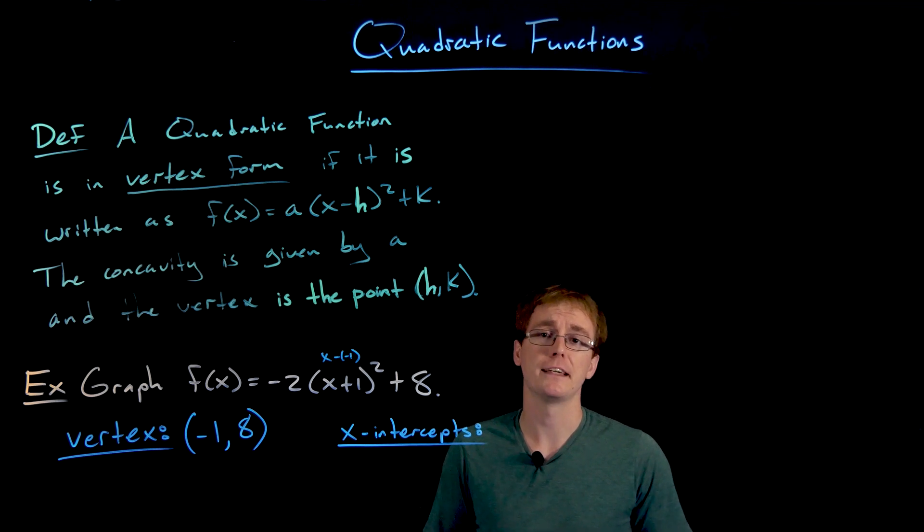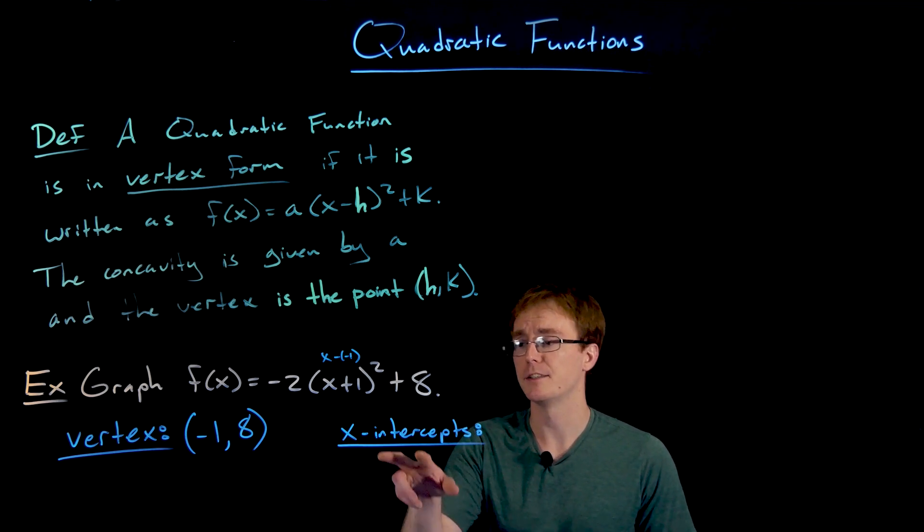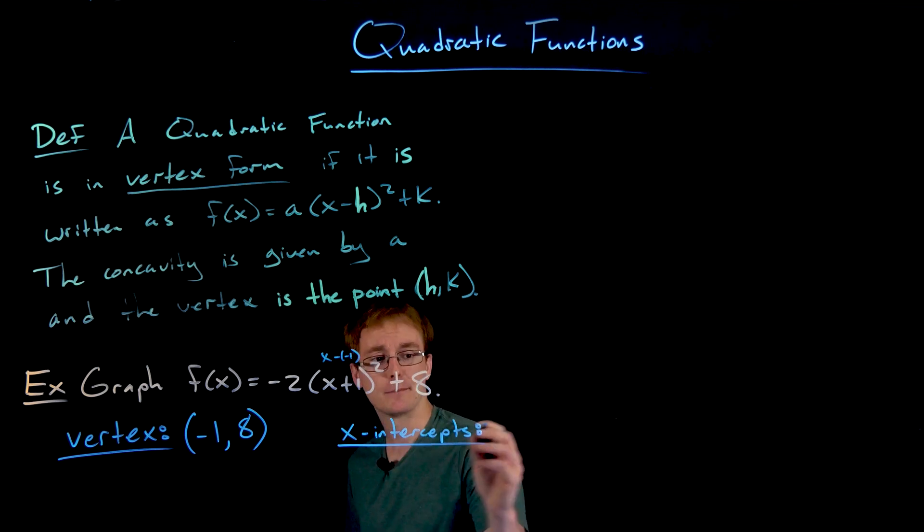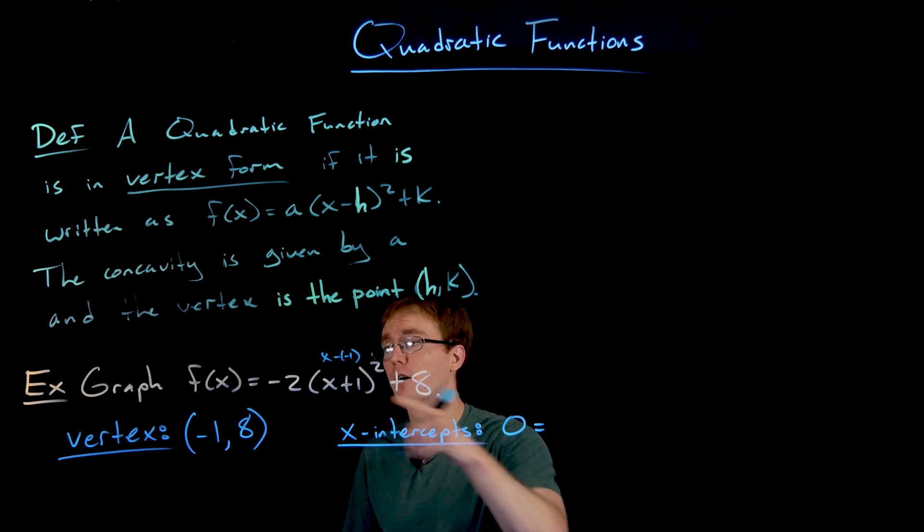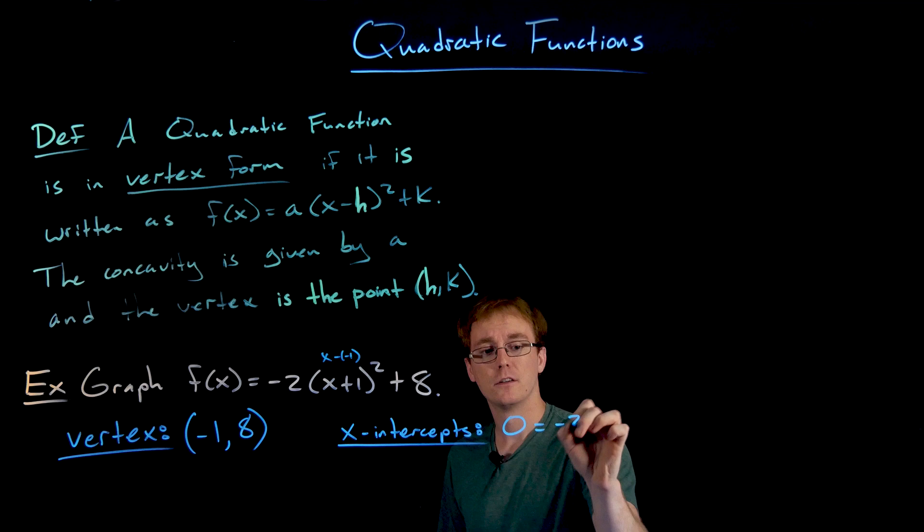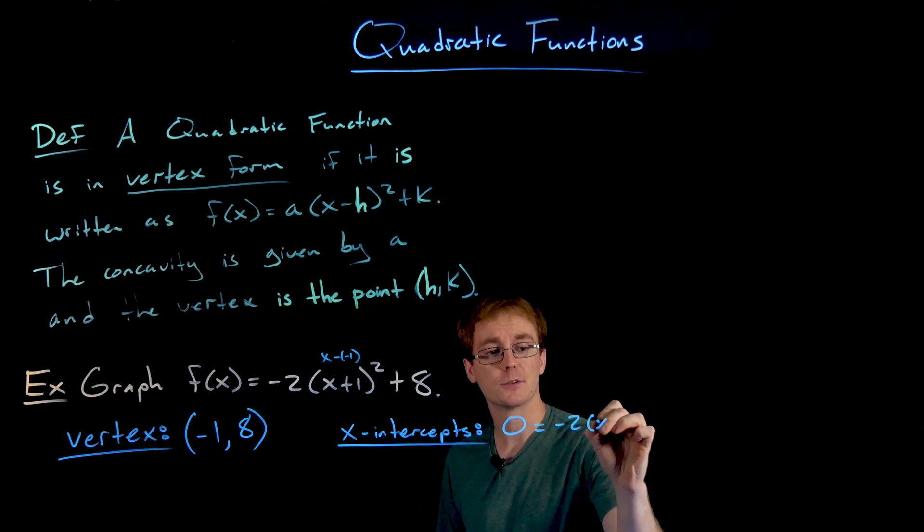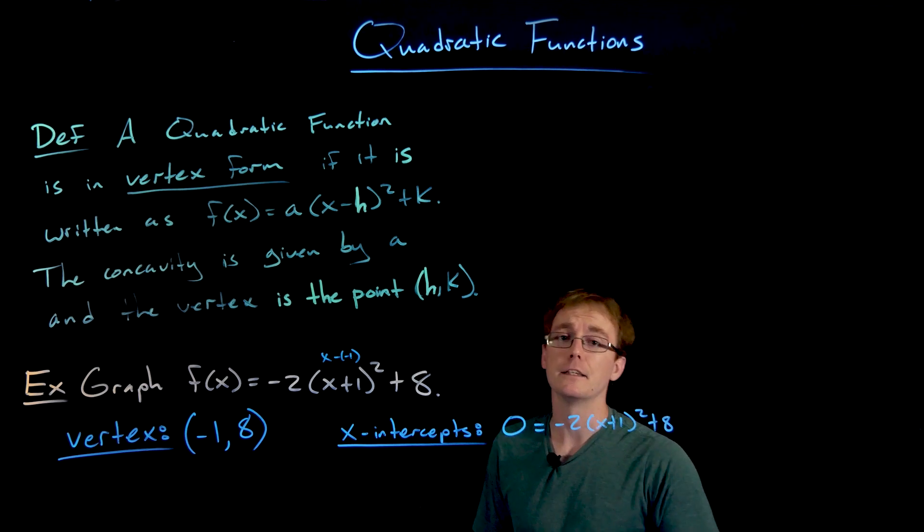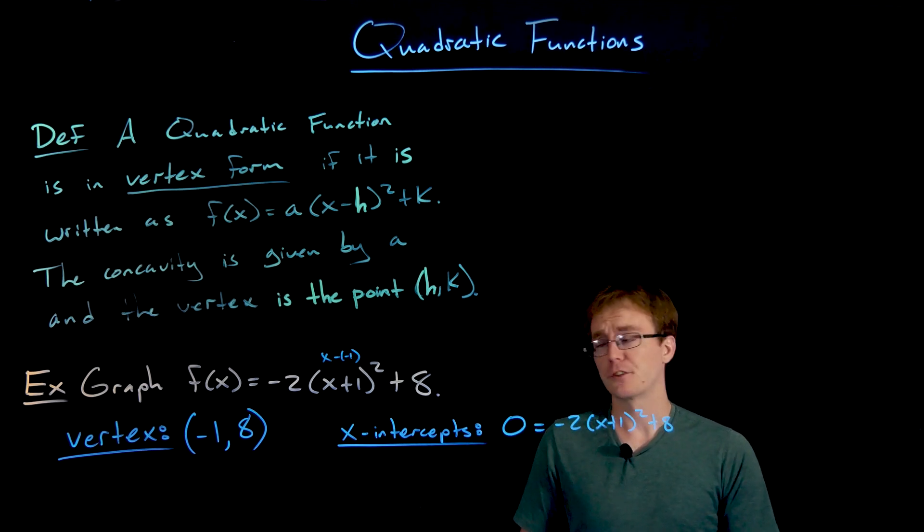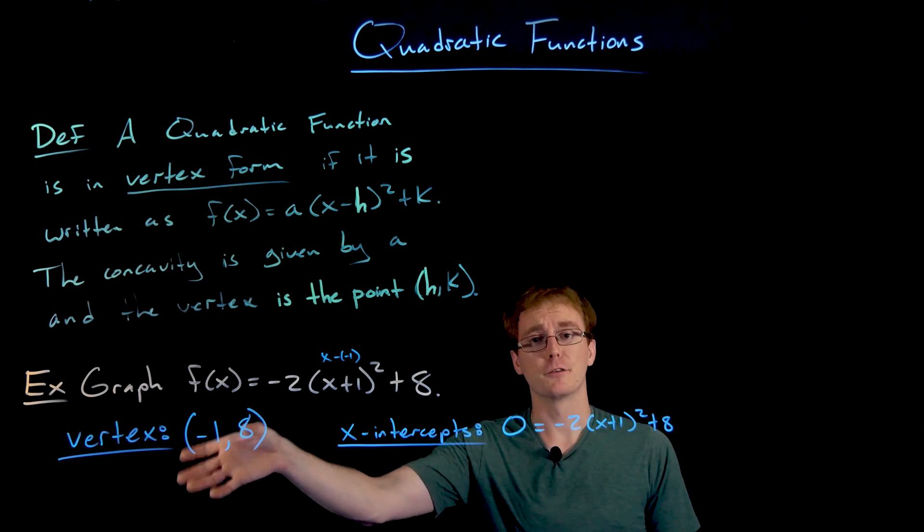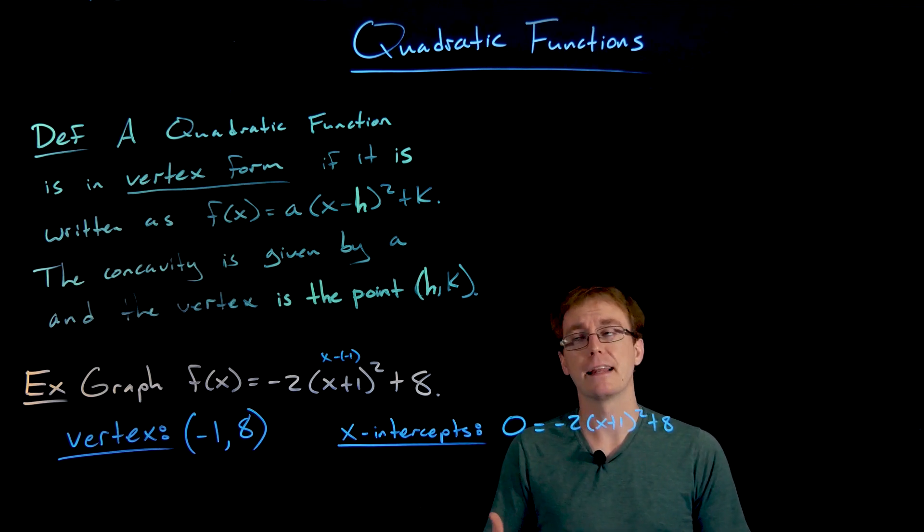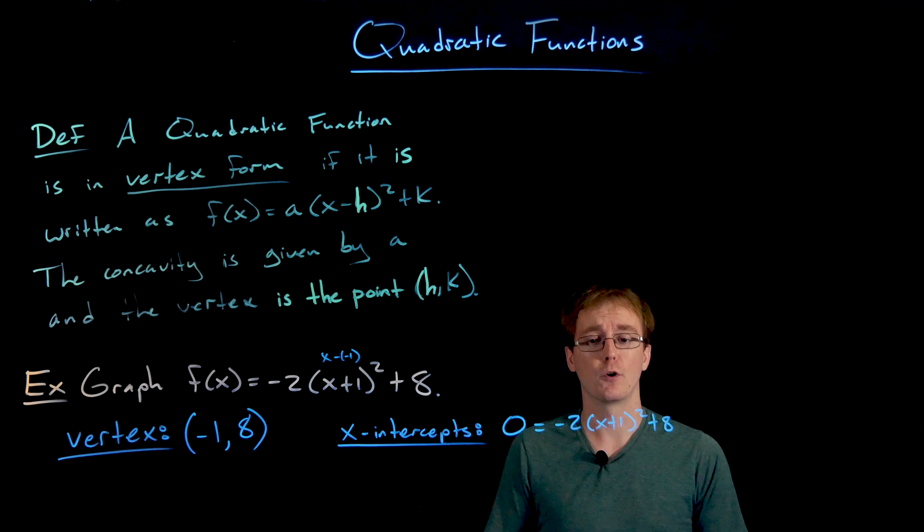What can sometimes be a disadvantage when using our vertex form is when we try to find those x-intercepts. Remember, to find our x-intercepts we have to solve when our function is equal to zero. So when is -2(x + 1)² + 8 equal to zero? In vertex form we get the vertex right away for free, but the x-intercepts take a little bit more work than they might have when we were in that standard form.